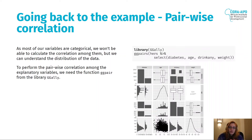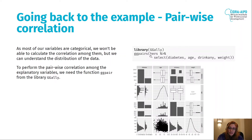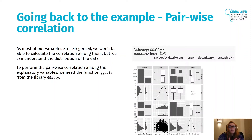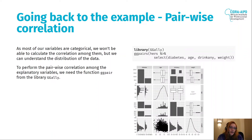To understand the correlation between each pair of variables, we can use pairwise correlation plots. We plot that using the library GGally — a complement of ggplot2 that you need to install. We call library(GGally) and use the ggpairs function, passing the data (selecting diabetes, age, drinkany, and weight, excluding the outcome). If two variables are numeric, we get a correlation value; if not, we get charts showing distributions and cross-tabulations.